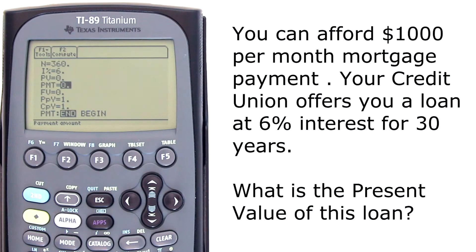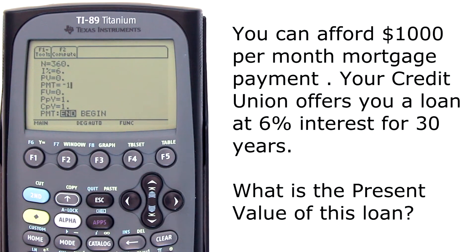PMT is payments. You can afford a monthly payment of $1,000, so enter negative $1,000. Negative because money is coming out of your pocket. Make sure you use the negative sign and not the minus sign — if you use the minus sign, you get a syntax error.